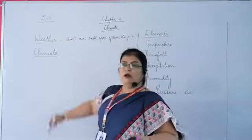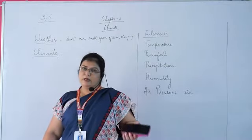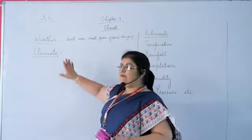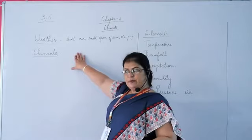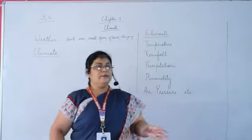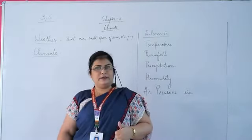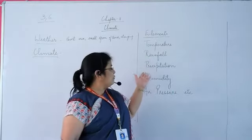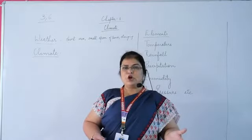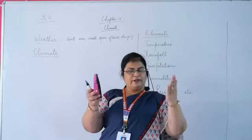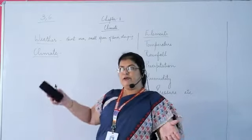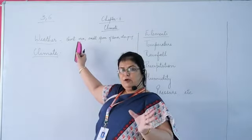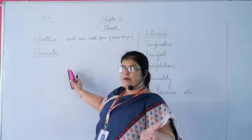Now, what is climate? Climate is the condition of the atmosphere which is common over a large area and over a long period of time. The elements of weather and climate are the same — temperature, rainfall, humidity, precipitation, air pressure. Both weather and climate describe atmospheric conditions. The difference is only that weather is for a short period of time over a small area, whereas climate is for a longer period of time over a larger area.